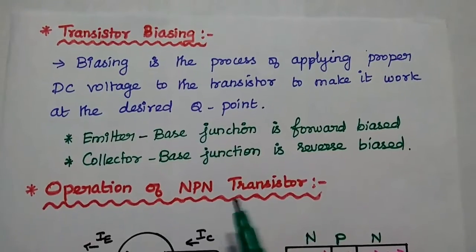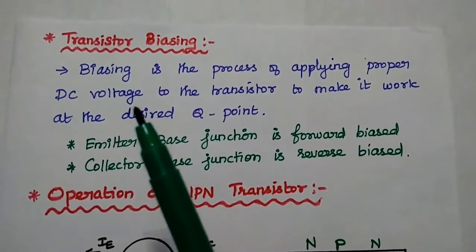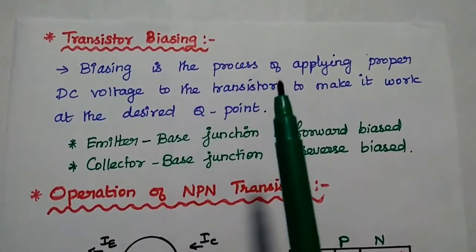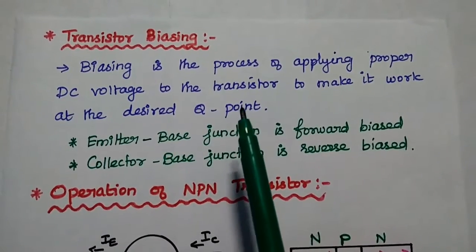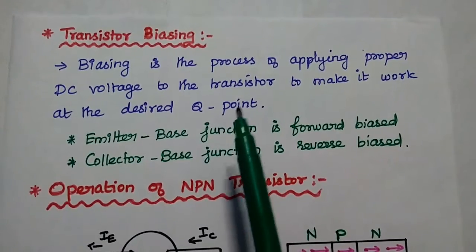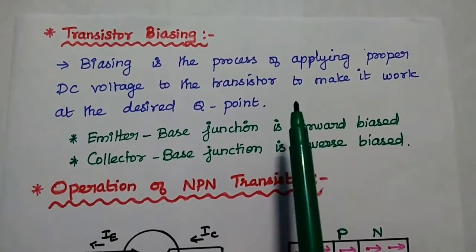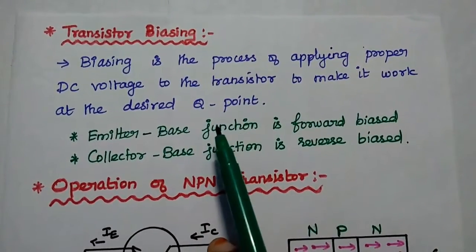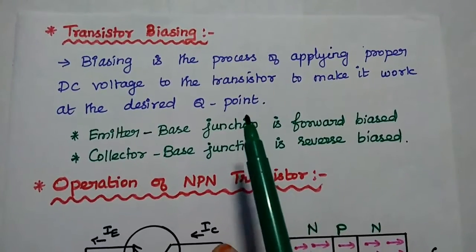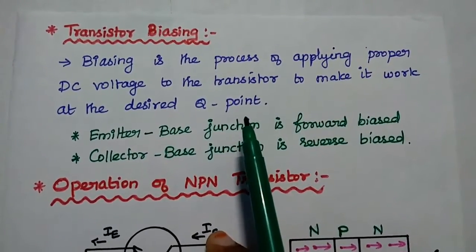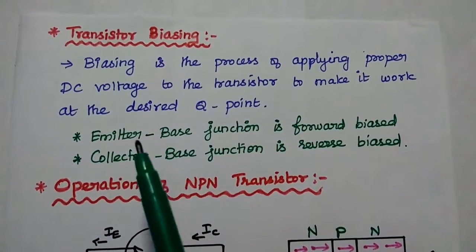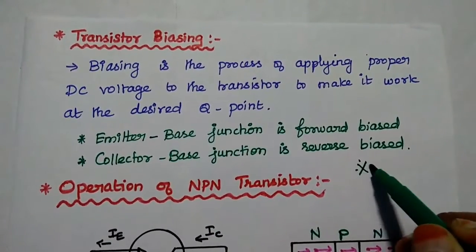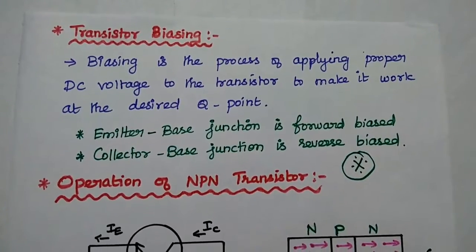Next, we are going to discuss the operation of transistor. Biasing is the very important concept in any electronic circuit. Biasing is the process of applying proper DC voltage to the transistor. We give this external power supply to the transistor in order to make it work at the desired Q point. The Q point is the operating point where we can get the maximum output. We have to ensure that the emitter-base junction is forward biased and the collector-base junction is reverse biased. In this condition, we can get the proper Q point.